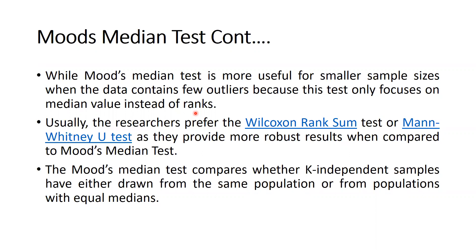In such cases, researchers prefer the Wilcoxon Rank Sum Test or Mann-Whitney U Test, as they provide more robust results compared to Mood's Median Test. I will share the description links for those tests as well. Mood's Median Test compares whether k independent samples have been drawn from the same population or from populations with equal medians.